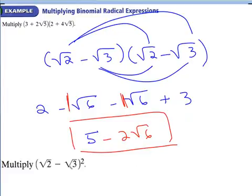For those who always make the mistake of just squaring the individual values — do not do that. Write it out twice and foil everything.